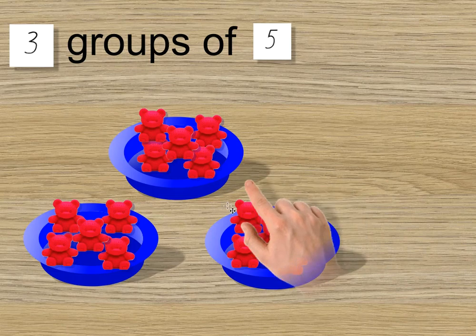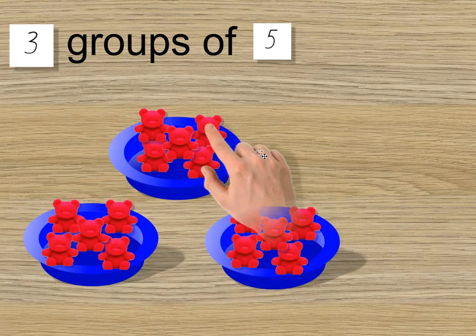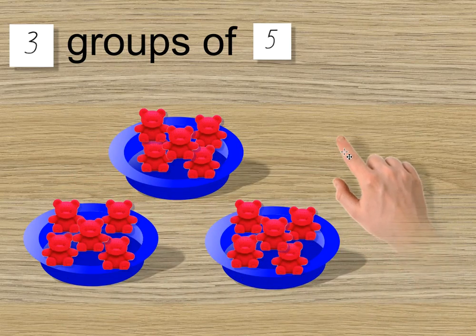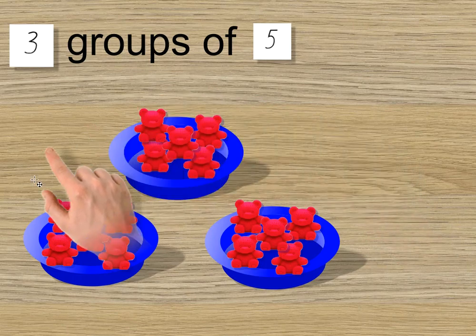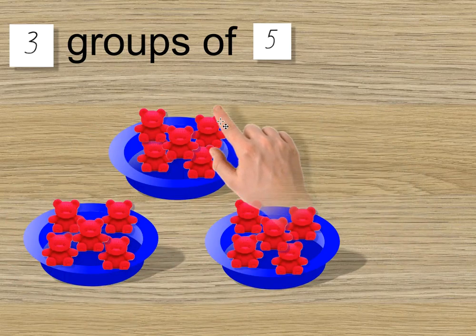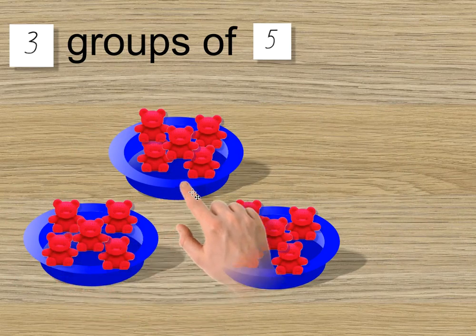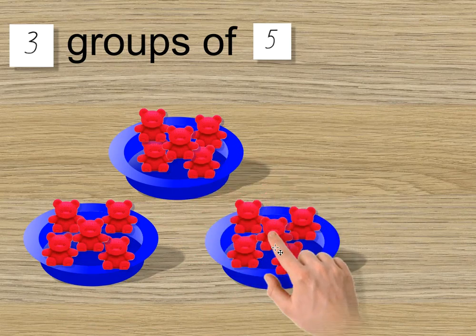You could count by fives. Five, ten, fifteen. You could recognize a double five here, and then add another group of five. Double five is ten, add one more group of five is fifteen.